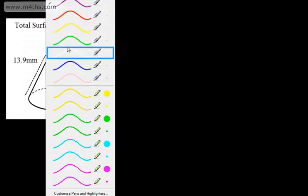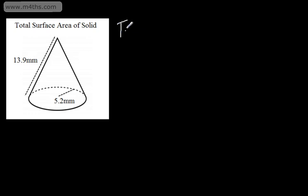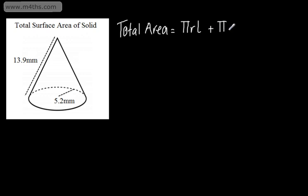In this next example, what we're asked to do is find the total surface area of this solid. So what we've got now is the curved surface area, and also the area of the circle on the bottom. So the total area is going to be pi multiplied by the radius multiplied by the slant height, plus the area of the circle which is just pi r squared.